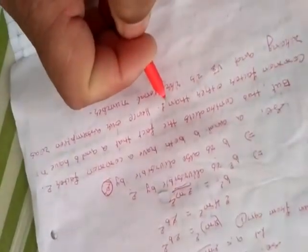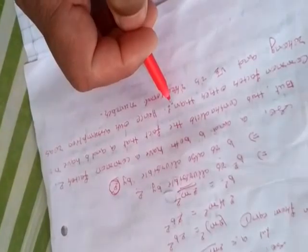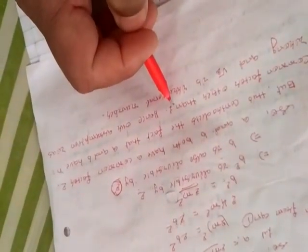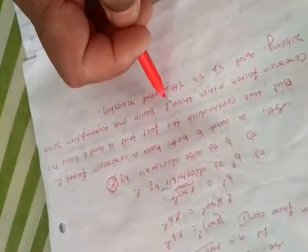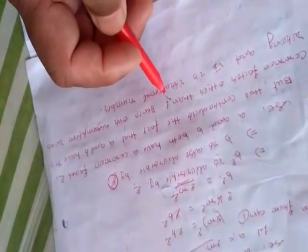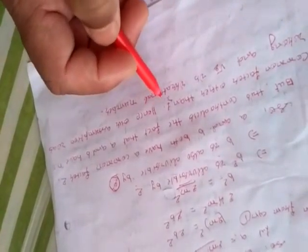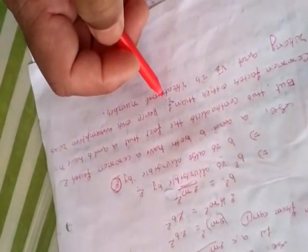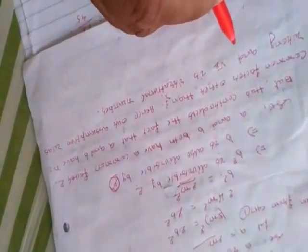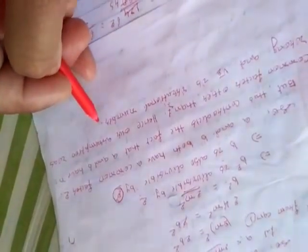But this contradicts the fact that a and b have no common factors other than 1. Initially, we assumed that a/b is in its simplest form, so a and b must have common factor only 1. But we found that a and b have a common factor greater than 1. Hence our assumption was wrong, and it proves that √2 is an irrational number.